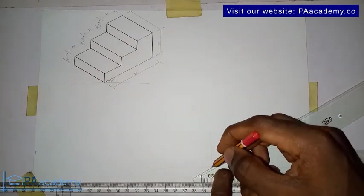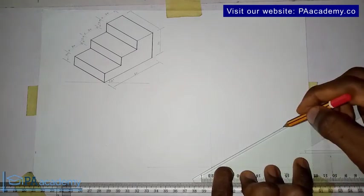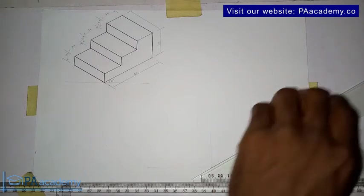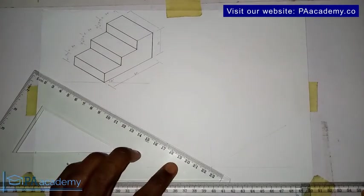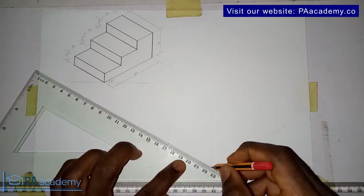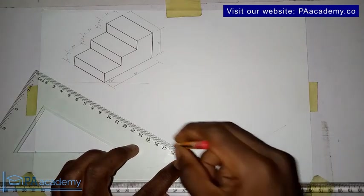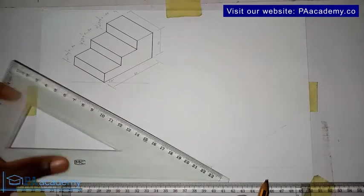So you bring in your set square from this point and you draw a straight line like this. You're going to have something like this.